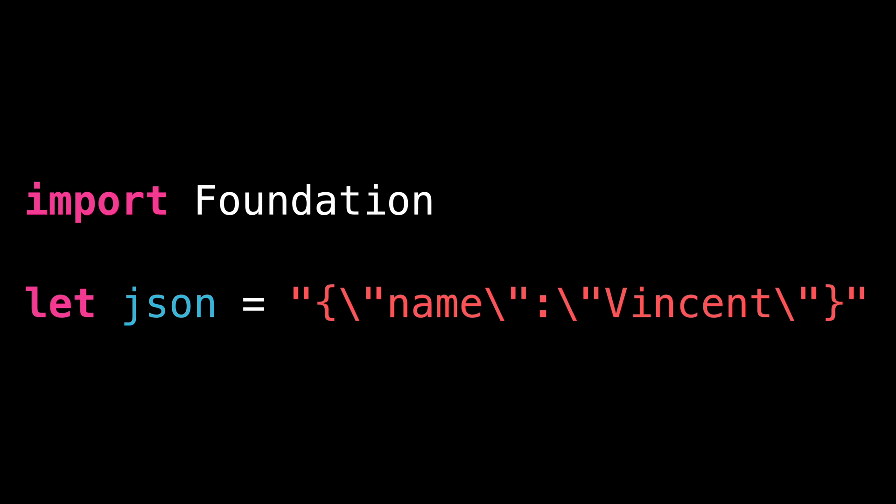I think it's quite obvious what needs to be improved with this code. I'm using a literal string to define some JSON data, but because a literal string considers the double quotes character as a special character, every time I use this character in the JSON, it needs to be explicitly escaped using a backslash character. As we can see, this introduces extra complexity and a lot of visual clutter.